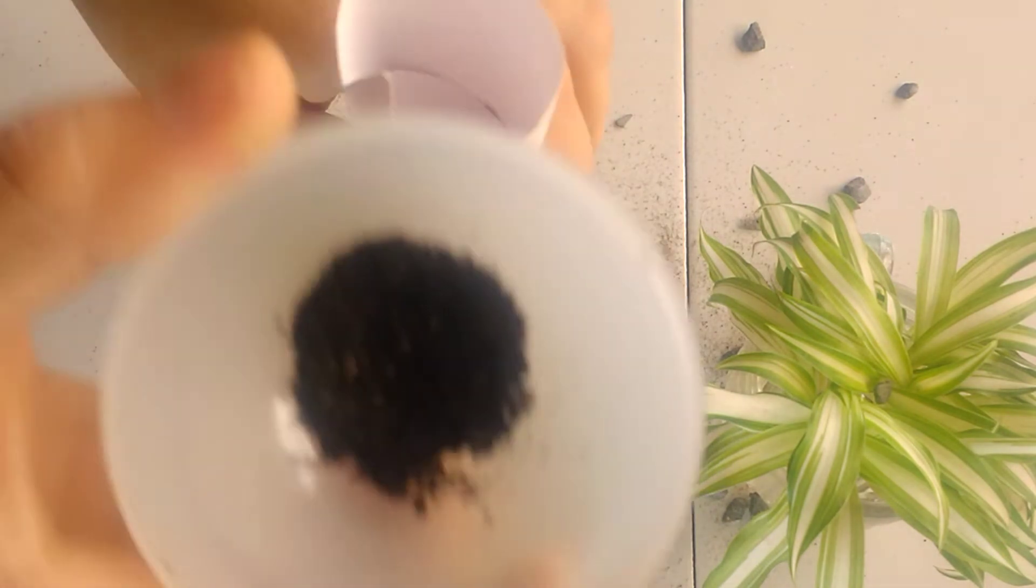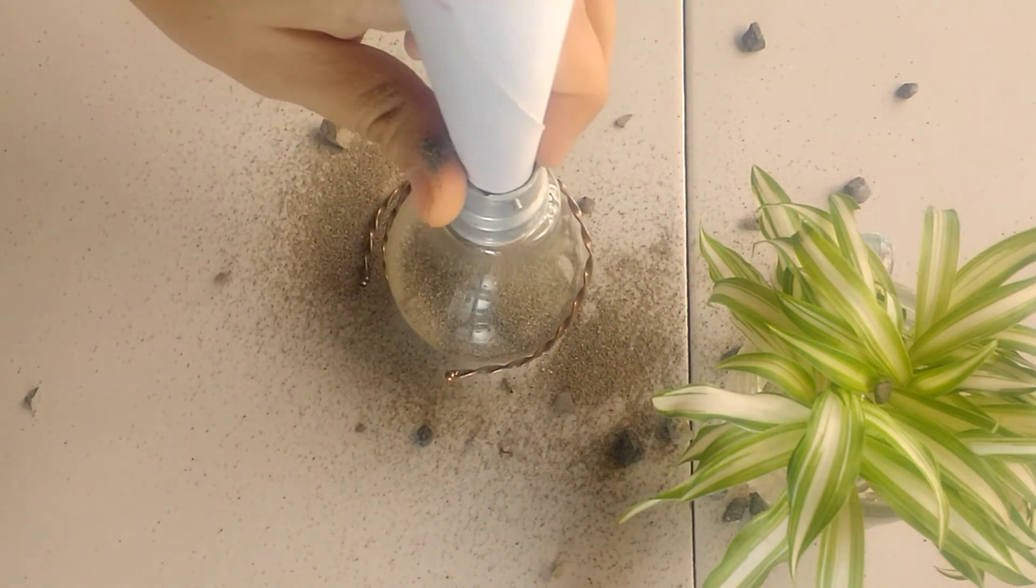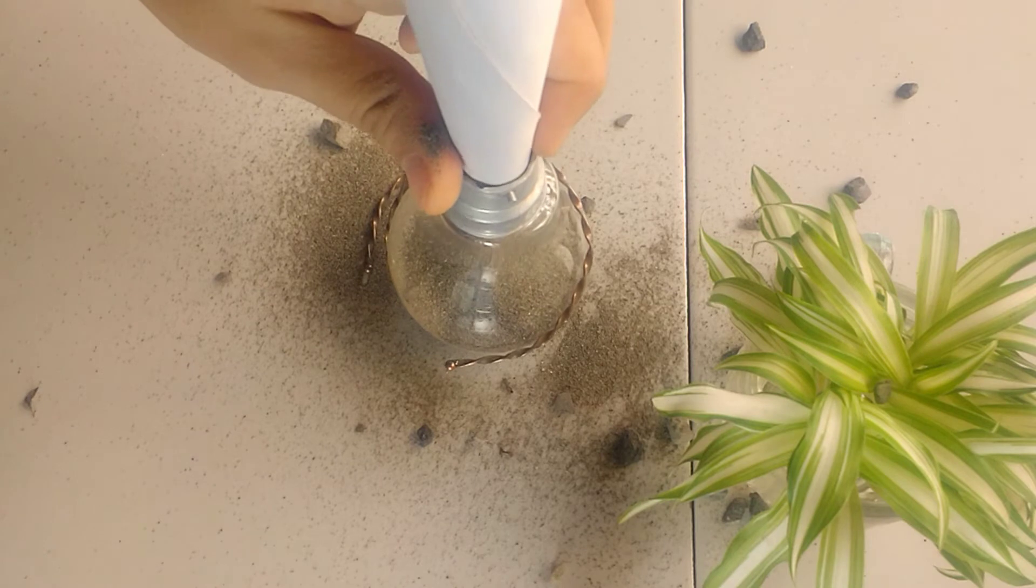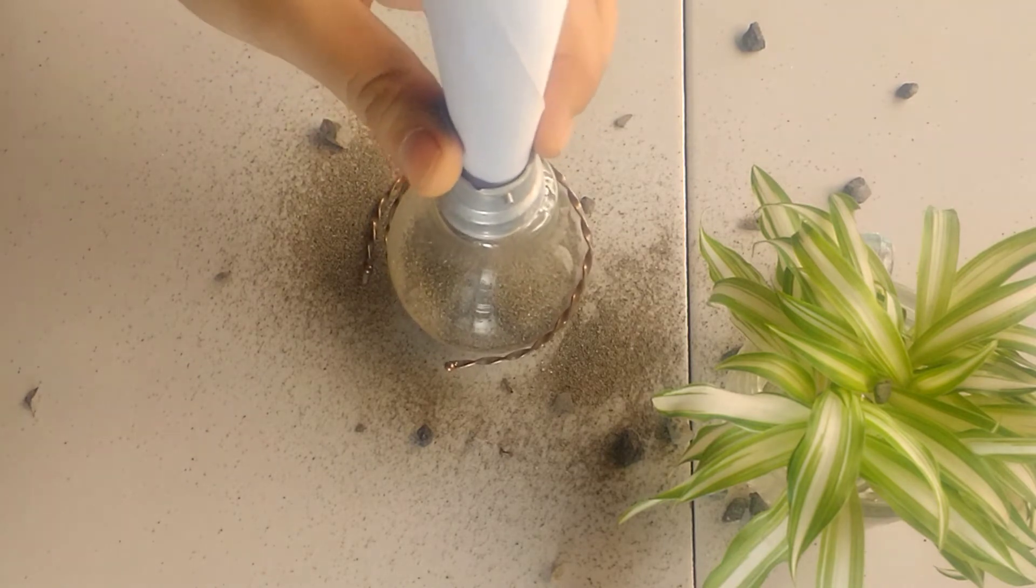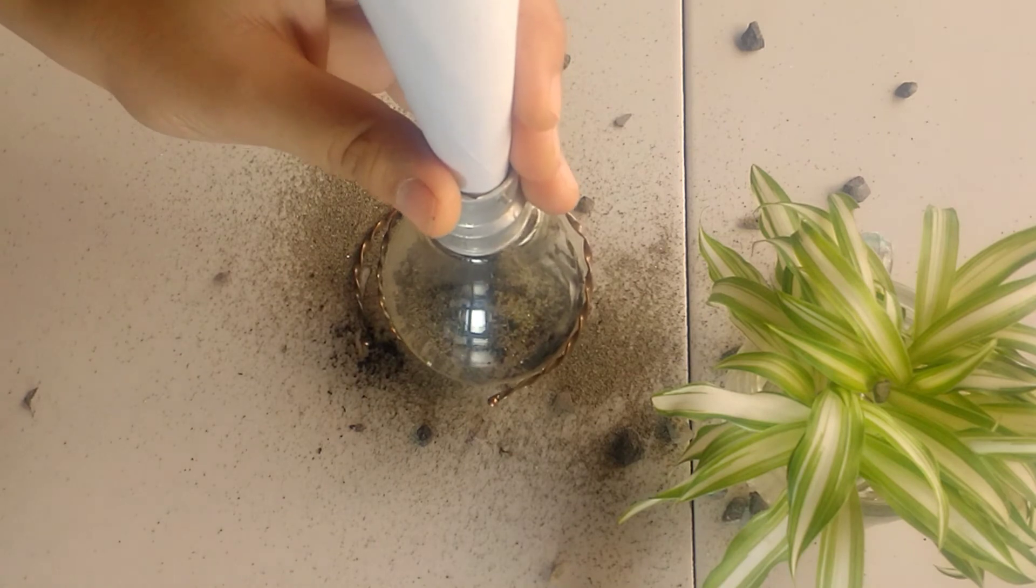Now we will add in some activated charcoal. It helps the plants stay healthy, removes unpleasant smell, and decreases the chances of mold development inside the terrarium. You'll only be needing a very thin layer of charcoal inside the terrarium.